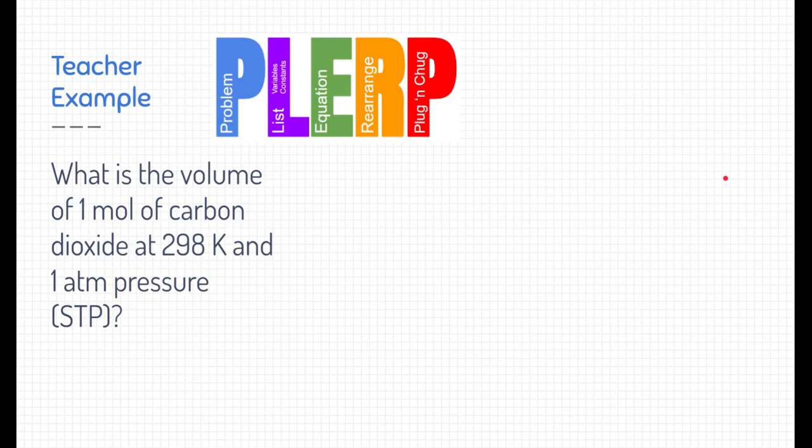P stands for find out what the problem is. L is list all the variables and the constants. E is figure out which equation you need to use. R is to rearrange that equation. And then P finally, we get to plug and chug all of our variables into our equation. So I'm going to go through that.